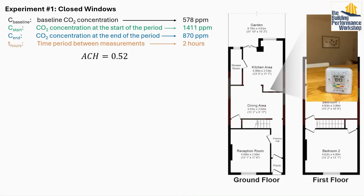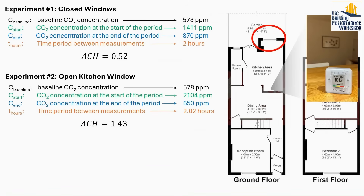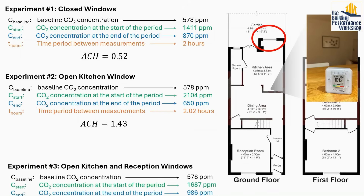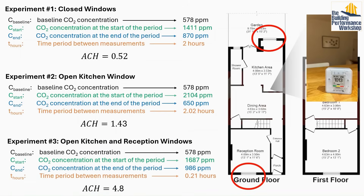The question then becomes: is there anything I can do to increase the ventilation rate in my home, and what combination of open windows will maximize it? When everything was closed, the ACH was 0.52. Opening just the kitchen window brought it up to 1.43 — better, but still under the recommended value of 4. Opening both the front window and the kitchen window increased the ACH all the way to 4.8. Opening windows across the house likely creates an effective draft, maximizing ventilation.